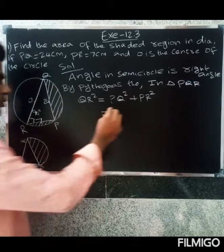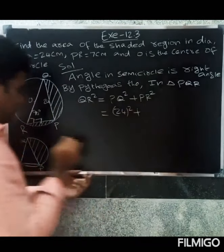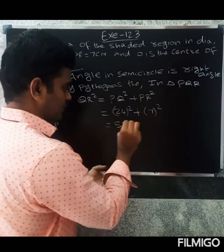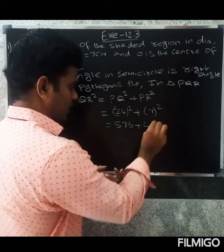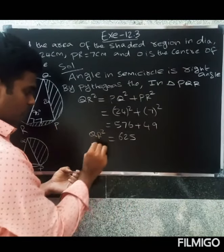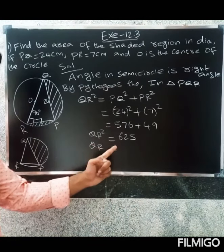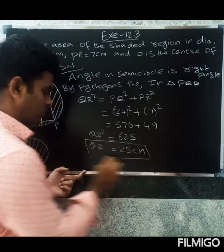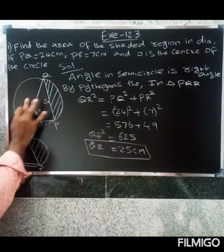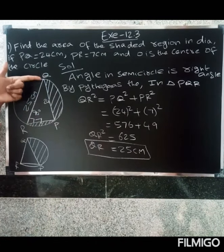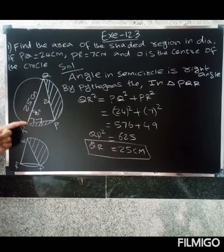PQ squared is 24 squared which is 576, plus PR squared is 7 squared which is 49, equals 625. QR squared equals 625, so QR equals square root of 625, which is 25 centimeters. QR is the diameter.